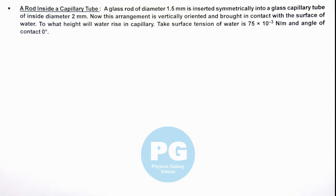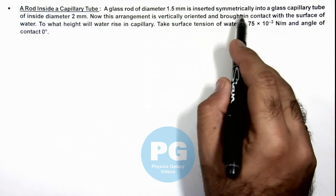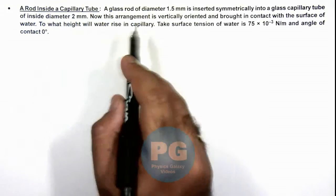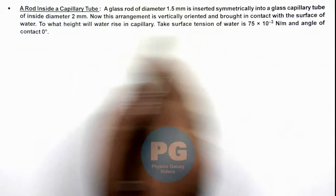In this illustration, we'll analyze a rod inside a capillary tube. We are given that a glass rod of diameter 1.5 mm is inserted symmetrically into a glass capillary tube of inside diameter 2 mm, and now this arrangement is vertically oriented and brought in contact with the surface of water.